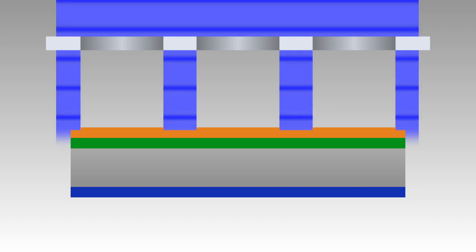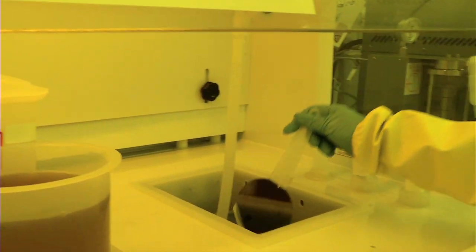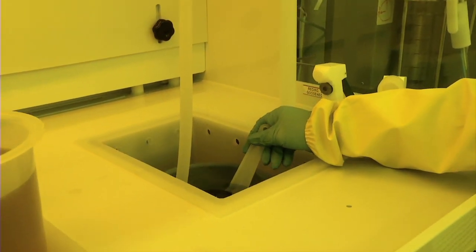A UV light source exposes the photoresist through the mask, transferring the pattern into the photoresist. Finally, the substrate is developed, rinsing away the exposed areas of the photoresist.